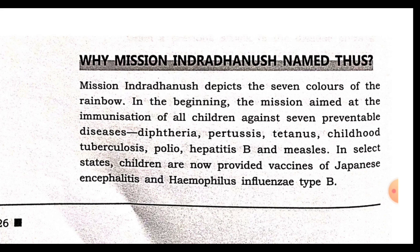The seven diseases targeted by Mission Indradhanush are: Diphtheria, Pertussis, Tetanus, Childhood Tuberculosis, Polio, Hepatitis B, and Measles. In addition, in selected states, children are also provided vaccines against Japanese Encephalitis and Haemophilus Influenzae Type B.